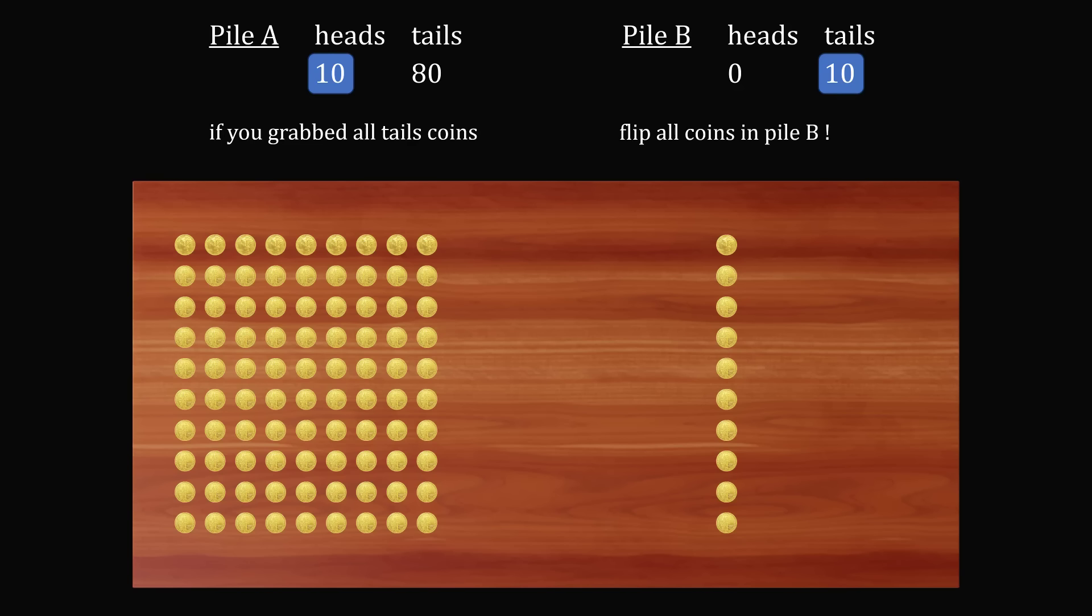What if we now flipped all the coins in pile B? This would make all of the tails into heads. So once we do that, all 10 of these tails will become heads and we would exchange these two numbers. So we would end up with 10 heads and zero tails. And look, the 10 heads will exactly match the number of heads in pile A. So we have a solution.